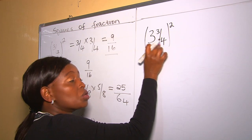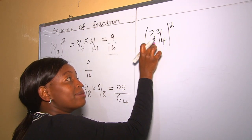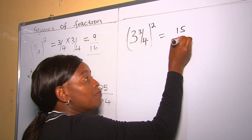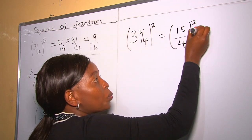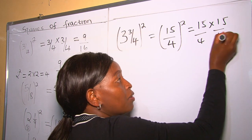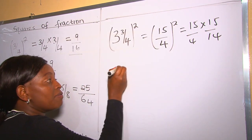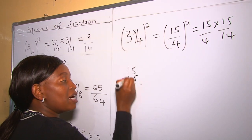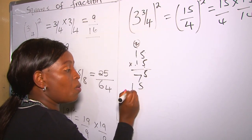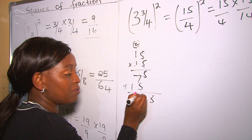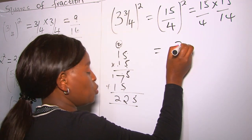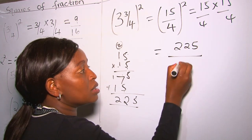Let's do our next example. This question is also a mixed fraction, so we change it to an improper fraction before squaring. Four times 3 is 12, and 12 plus 3 is 15, giving us 15 over 4 — all this squared. To square means multiplying the number by itself: 15 over 4 times 15 over 4. For 15 times 15: 5 times 5 is 25, 5 times 1 is 5 plus 2 is 7.